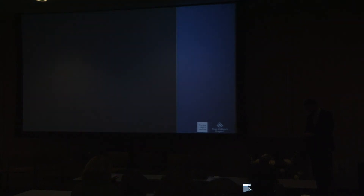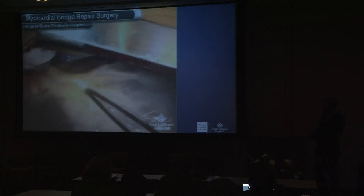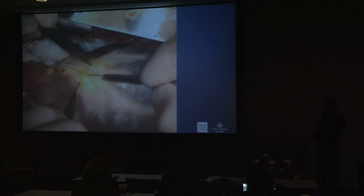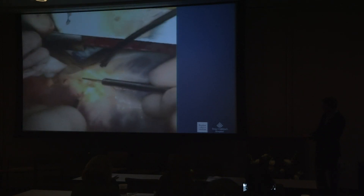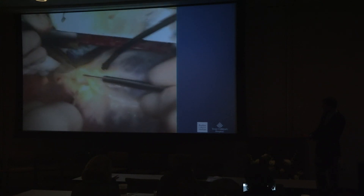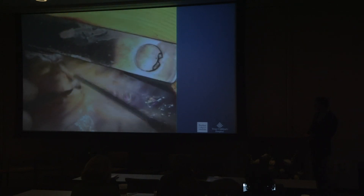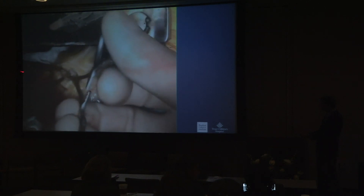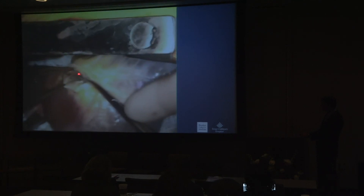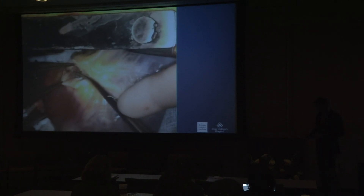Here is an intraoperative image of a patient on bypass with the heart arrested — the head is to your left. We've identified the LAD and are working through the fat to find the epicardial LAD distal to that last diagonal. There's a large coronary vein there that I'm trying to preserve. Here we're working under the bridge, between the coronary artery and the muscle, developing a plane so that the muscle can be resected.